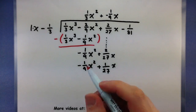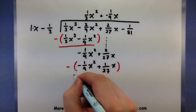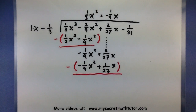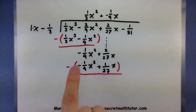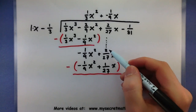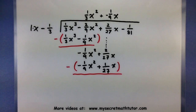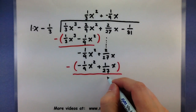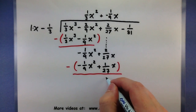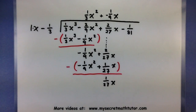Alright, so let's go ahead and subtract. These terms are canceling each other out because I have negative 1/9 minus negative 1/9 — that's good. Here I have 2/27 x minus 1/27 x. They have the same denominator, so 2 minus 1 will just leave 1/27 x. Perfect.